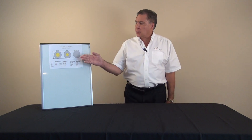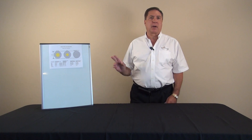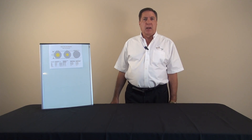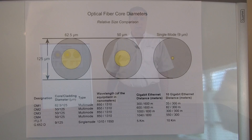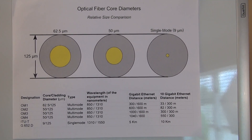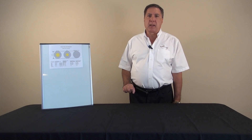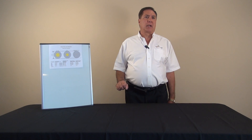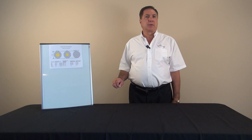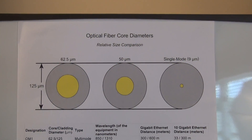On this chart we have represented the three most popular core sizes of fiber optic cables used for networking. As you can see, each of them has an outer diameter of 125 microns — that is roughly the diameter of a human hair. Fiber optic strands are made up of two main components: the core and the cladding.